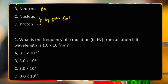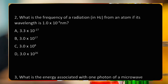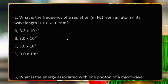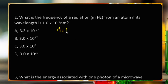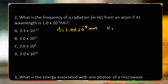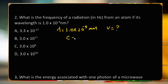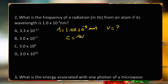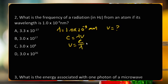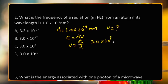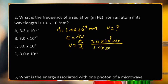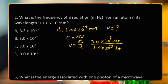What is the frequency of radiation in hertz from an atom if its wavelength is 1.0×10⁻⁹ nanometers? The wavelength lambda equals 1.0×10⁻⁹ nanometers, which is 1.0×10⁻⁹ meters.